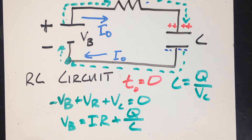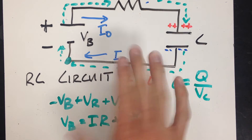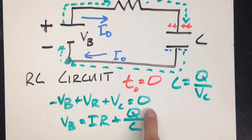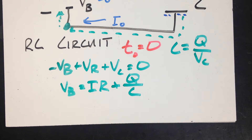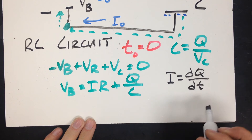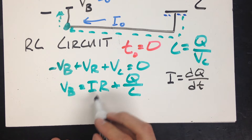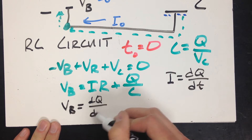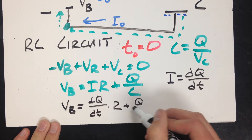So we have the voltage across the battery equals current through the resistor times R plus charge over capacitance. The resistance and capacitance are constants — they won't change. What will change is the current through the resistor and the charge on the capacitor. Since current is dQ/dt, I can substitute that in. So V_B equals dQ/dt times R plus Q over C.